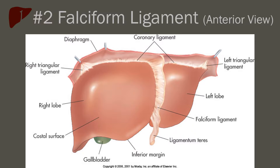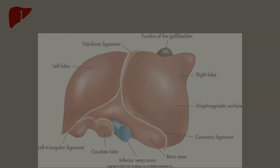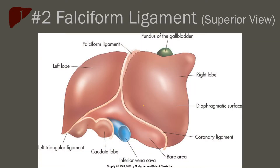The second ligament is the falciform ligament. The falciform ligament is broad and thin and connects to the liver from the anterior abdominal wall. It arises superiorly from the coronary ligament and ends inferiorly at the ligamentum teres. Only on the anterior surface of the liver, it anatomically divides the right and left lobes. The superior view shows how the falciform ligament is a continuation of the coronary ligament and wraps from superior to anterior.